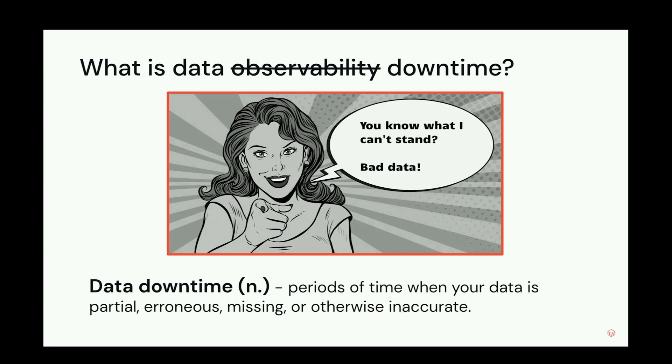Quite a few hands, right? So why is data downtime even important? As organizations adopt more and more data and rely on it for mission-critical business decisions and even customer-facing products, being able to tell that your data is reliable, accurate, and all there right on time becomes very, very important. Data observability comes in to solve this problem of how we ensure our data is actually of high quality.